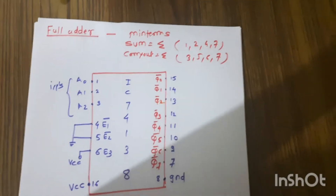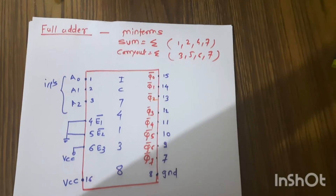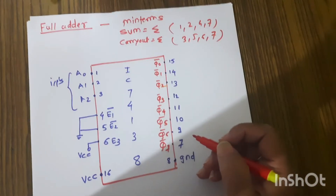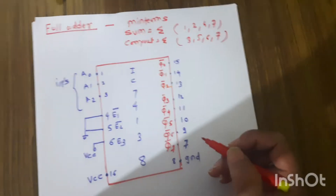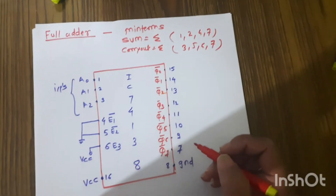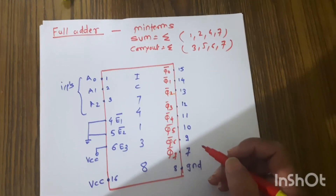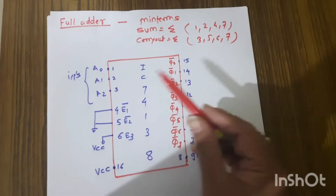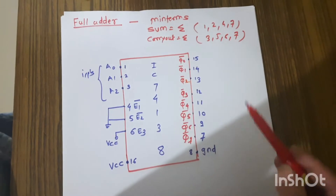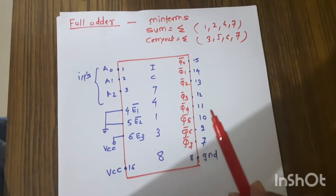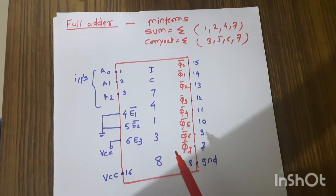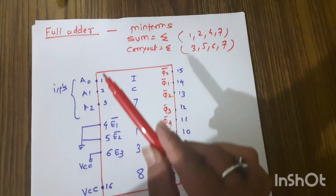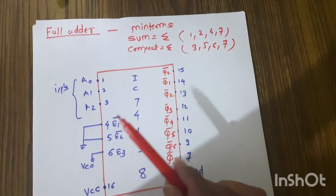In this video we are going to see how we can draw the circuit diagram for a full adder using IC 74138. As we all know, IC 74138 is the 3-to-8 decoder IC, so it has three inputs.